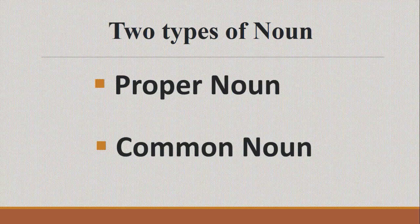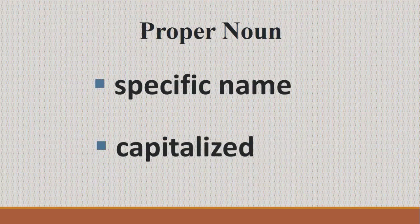The two types of nouns we are going to learn about today are proper noun and common noun. Now what is a proper noun? A proper noun is a noun which is a specific name, and it is always written with a capital letter. Proper nouns are the special names. Nouns are names for things, animals, and people, but proper nouns are the special names.